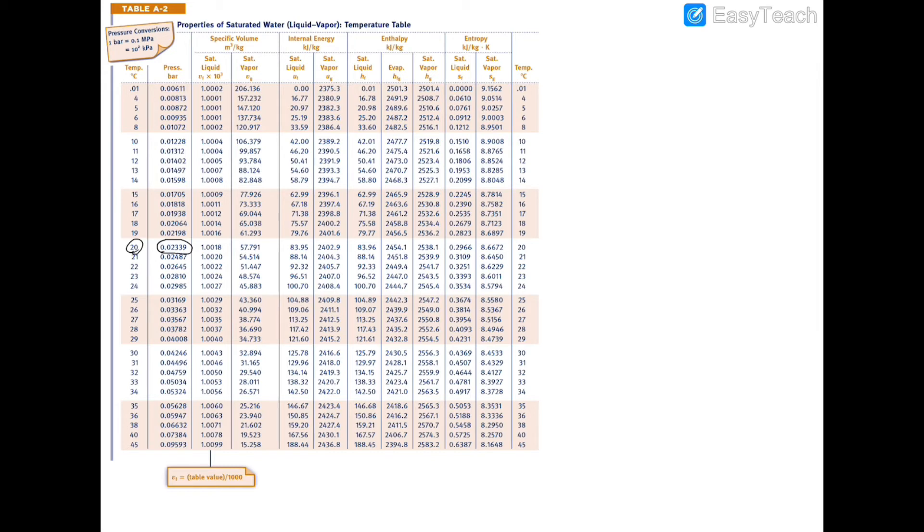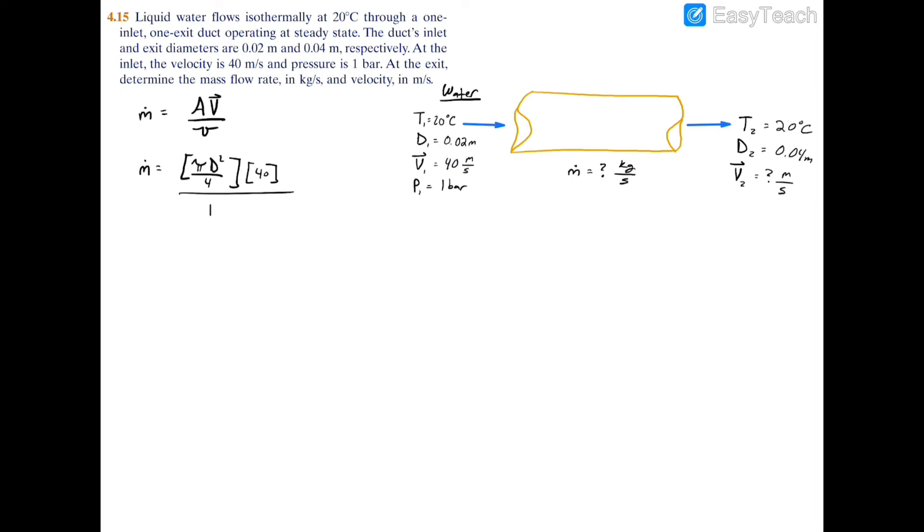Therefore, we have a liquid here, so we can approximate that we have a saturated liquid since there's not much difference between a saturated liquid and a compressed liquid. We can approximate our specific volume as 1.0018, and you would have to divide it by 1000 as indicated below.